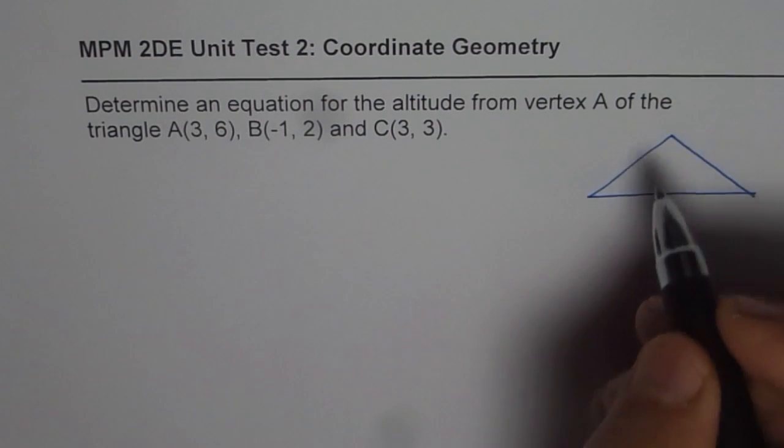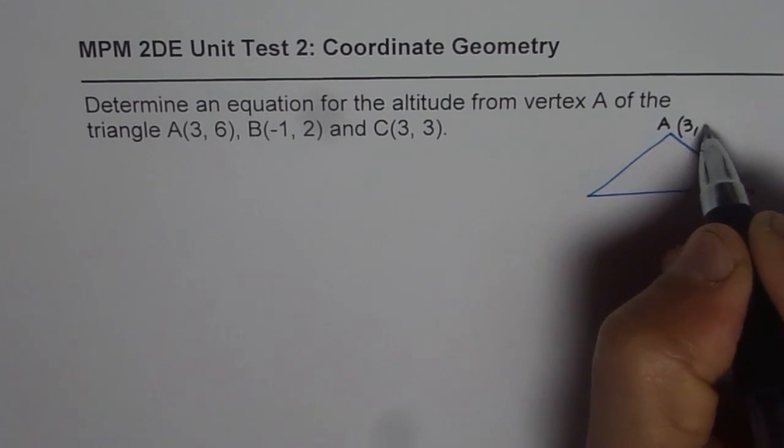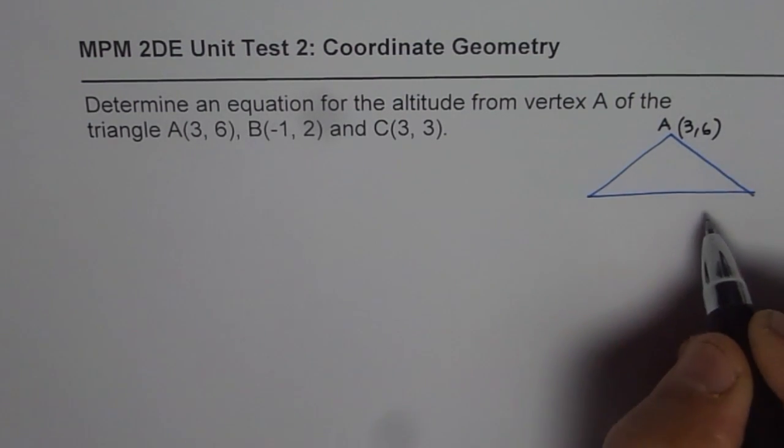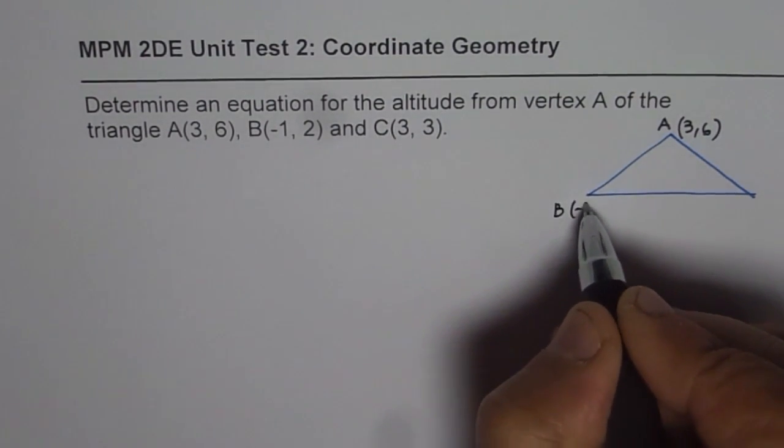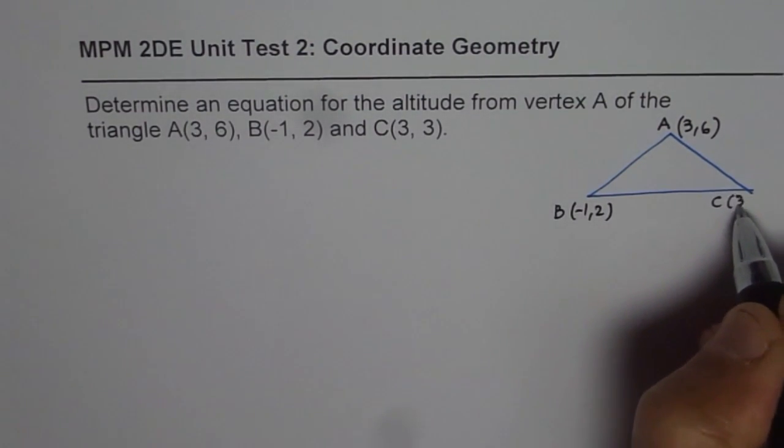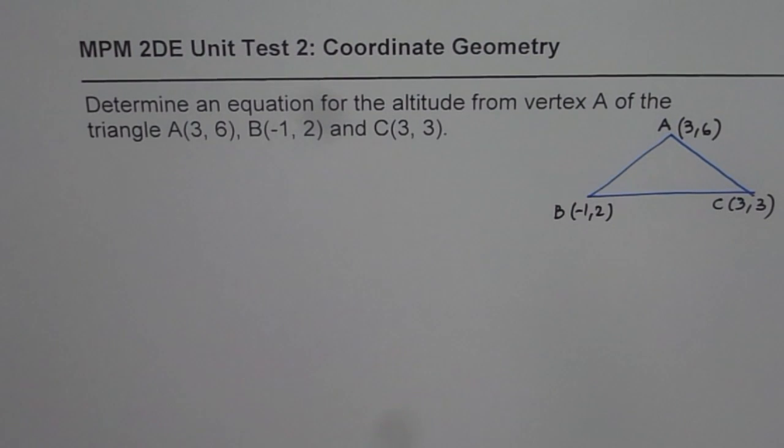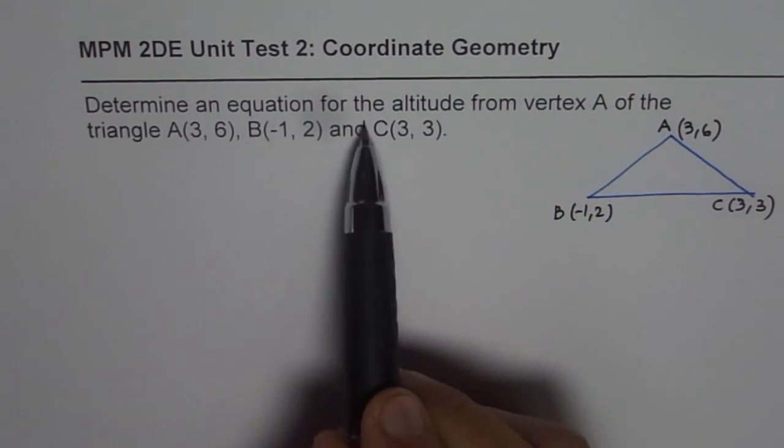So let's say this is our sketch for the triangle. Here the vertex A is (3, 6), B is (-1, 2), and C is (3, 3). So that becomes the three vertices of the triangle.